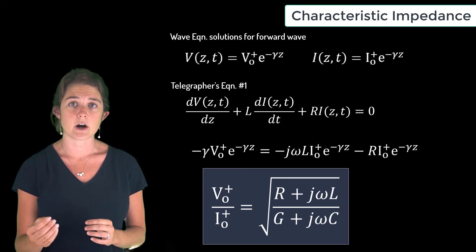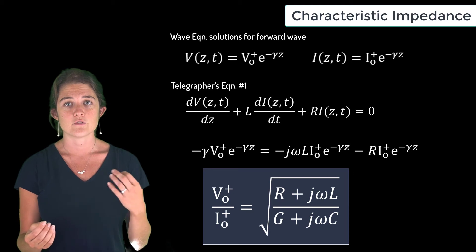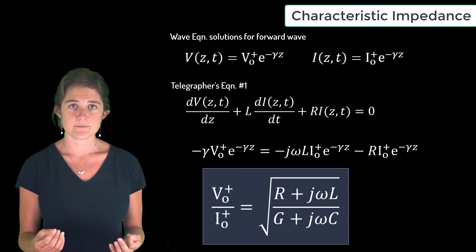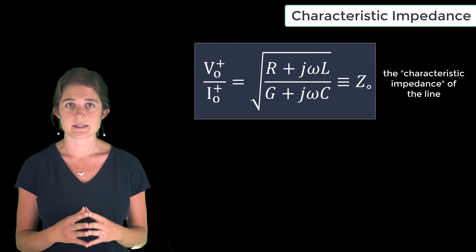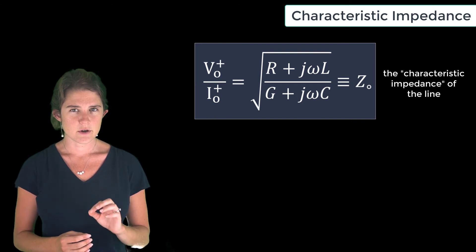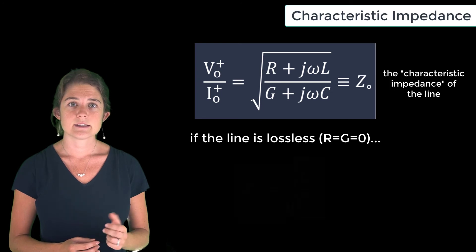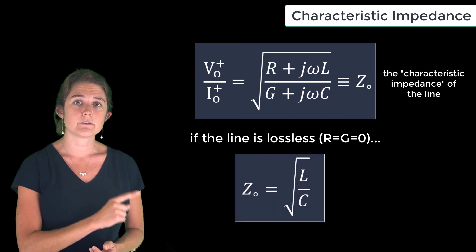We will define this quantity as Z₀, the characteristic impedance of the line. Note that if the line is lossless, Z₀ becomes this purely real quantity, the square root of L over C.